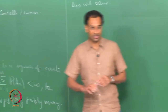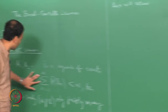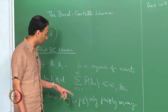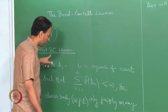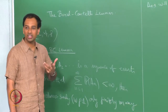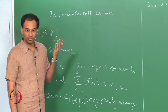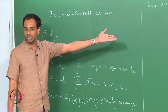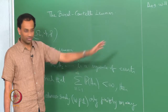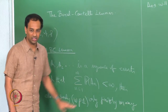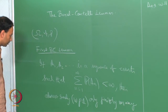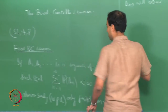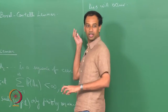There are only 2 possibilities for this summation. The probability of A_n is a non-negative sequence, so if you sum a non-negative sequence from n equals 1 to infinity it is always well defined — the question is whether it goes to something finite or goes to plus infinity, there are only 2 possibilities. The first BC lemma talks about the case when it is finite; the second Borel-Cantelli lemma talks about the case when it is infinite.